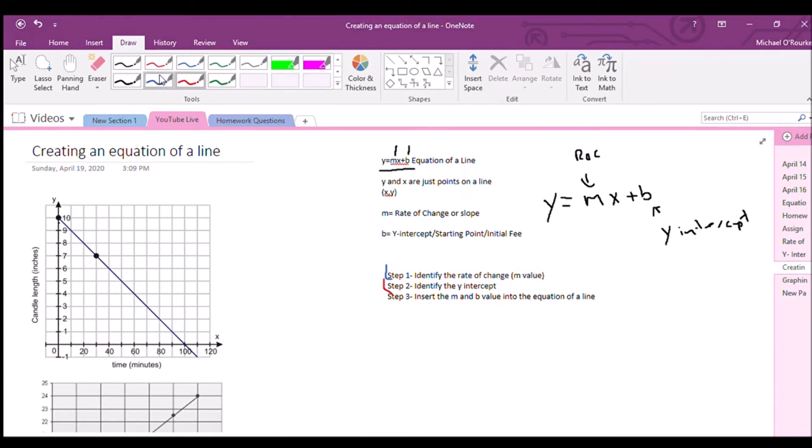So first thing we do, step one, identify the rate of change. So if we do it here, take a look, we're going to build a little triangle. So our rate of change here is minus three and over 30, right? So step one, M equals minus three over 30, which if we reduce, it becomes negative one over 10.